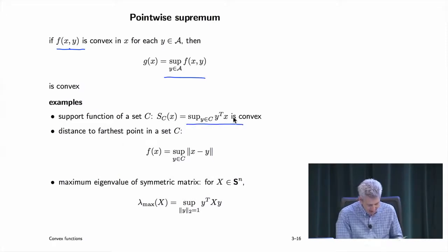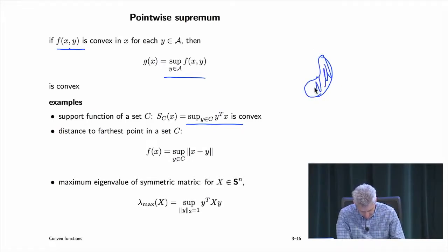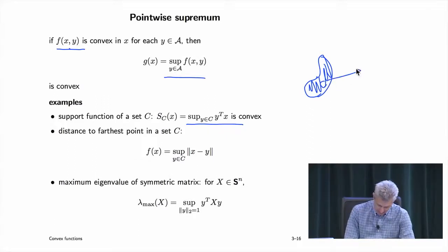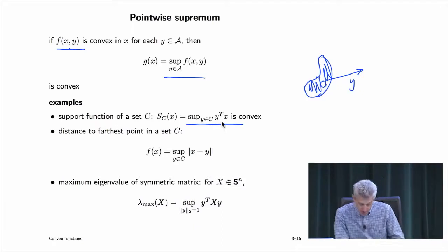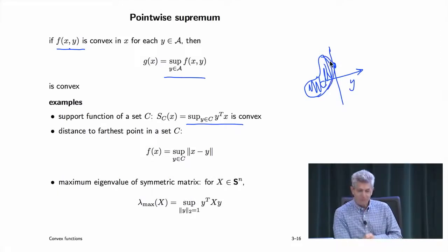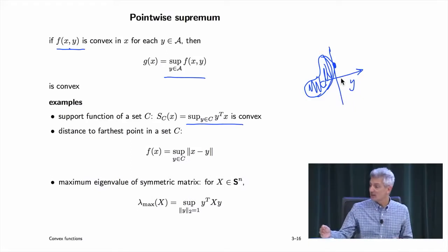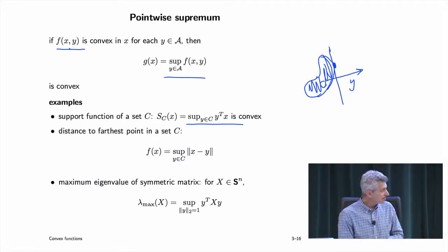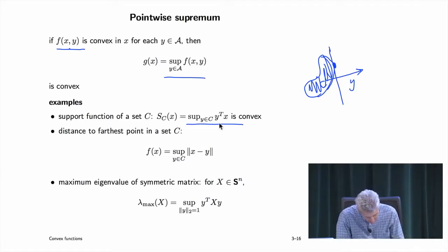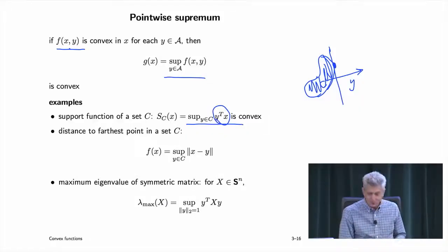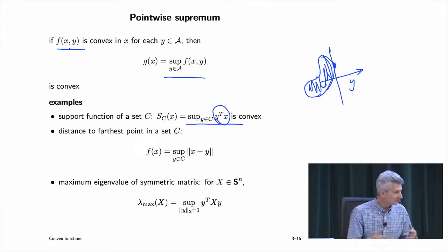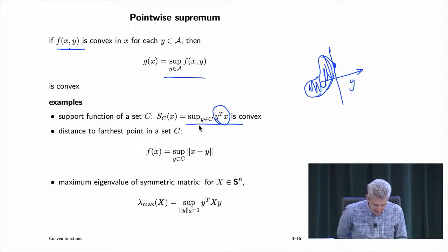Here's an example: the support function of a set C. For a vector y, you form S_C(y) = sup_{x in C} y^T x — the largest inner product with vectors in C, telling you how far you can go in direction y. This is a convex function of y because y^T x is linear in y, therefore convex, and we take a supremum over them.